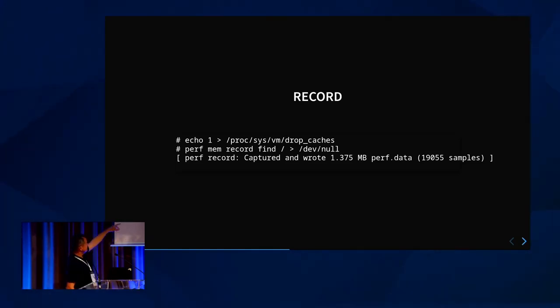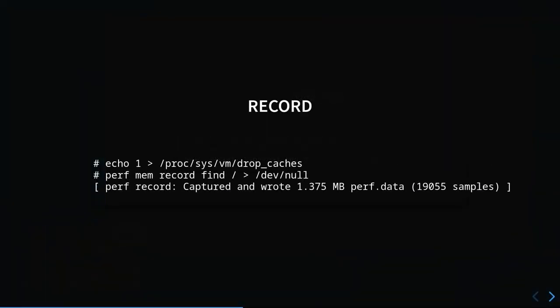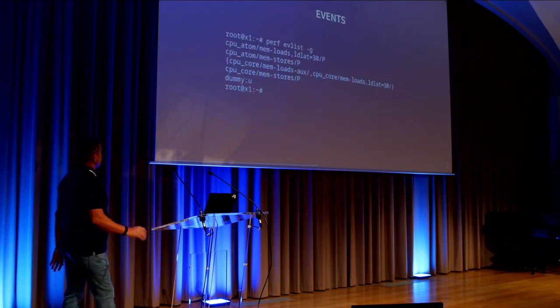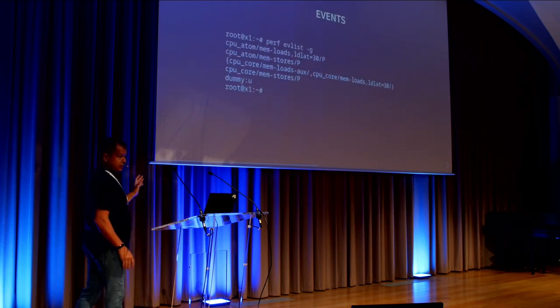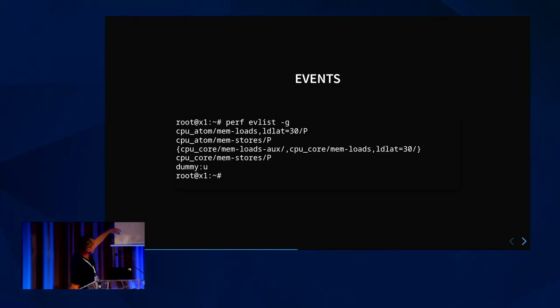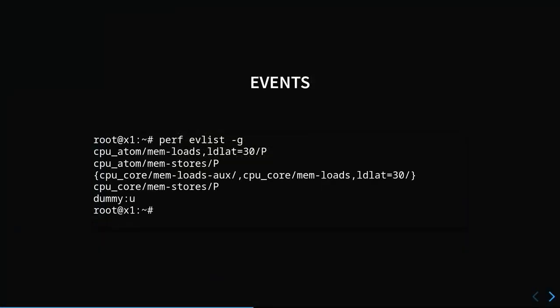For a simple use case: drop the caches and do 'perf mem record find' on a Btrfs filesystem to /dev/null. It records some data — about 19,000 samples. This is a hybrid machine which is a complication now, but the interesting part is: mem_loads, load latency 30, and I want precise events. That's it. Or mem_stores. The other events are related to specificities of Intel — the tool tries to hide this away from you.